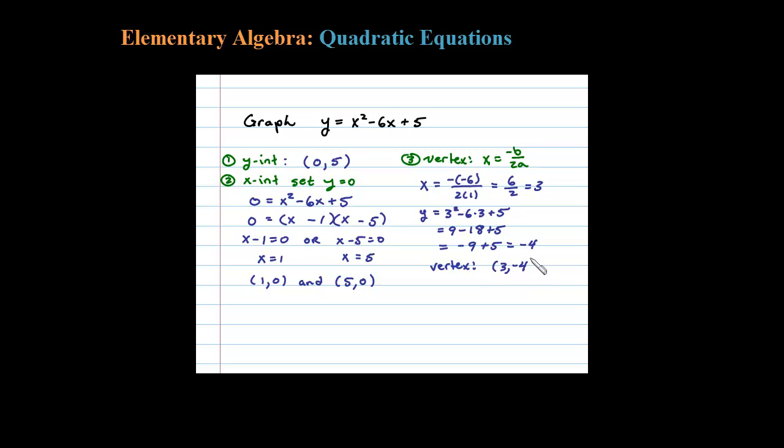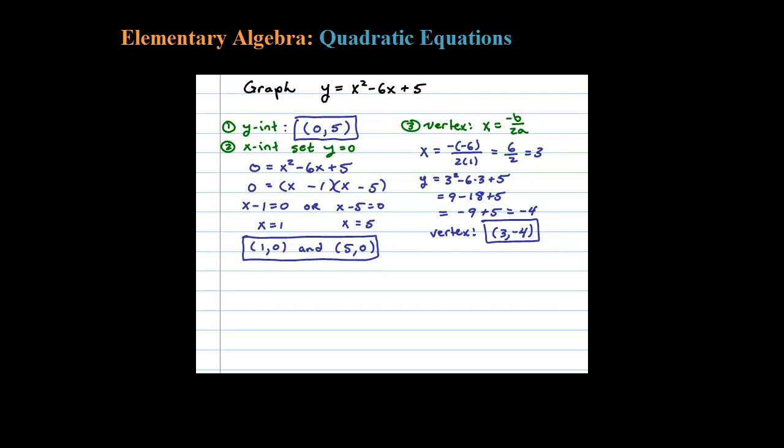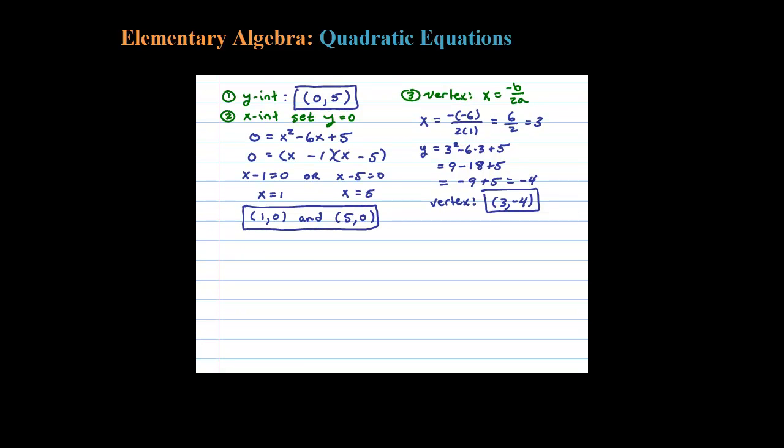Once we have our y-intercept, our x-intercepts, and the vertex, we're ready to graph. Usually when we graph these, we want five points. Five points determine a parabola. Let's draw on a blank Cartesian coordinate system. Now let's plot our points. The y-intercept is 0 comma 5.